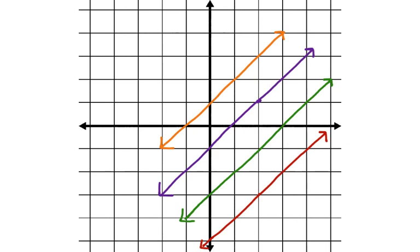Here is a family of parallel lines. Now you know that they will all have the same slope. Can you write the equation for the orange line? Let's make a few notes. We can start by figuring out the slope. We go rise over run, and this line has a slope of one. It intersects the y-axis at positive one.